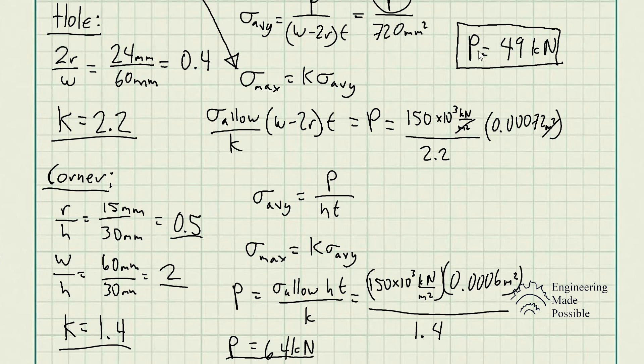Let's solve for the stress concentration at the hole first. The parameter from the graph is 2R divided by W. Here W is the width of the plate, 60 millimeters, and 2R is the diameter of the hole, 24 millimeters. So 24 divided by 60 gives 0.4. Going to the value of 0.4 on the graph and reading the K value from the left-hand side gives K = 2.2. For the average stress, the cross-sectional area is the rectangle's area minus the hole's dimensions, giving P divided by 720 mm².